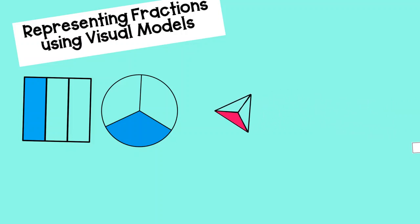Very similar to that circle is a triangle. Again, you take the triangle, divide it into those three equal parts. You can see how they look a lot like the parts in the circle. One is colored, three equal parts, so that is one-third.